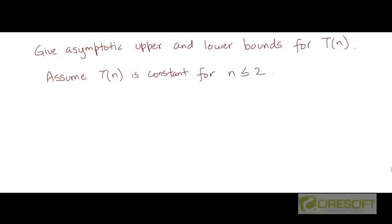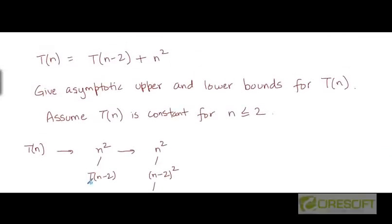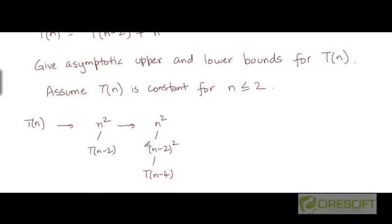We could try to use the recursion tree method. We start with a single node T(n), which gets replaced with n² and one single child T(n-2). Then in the next iteration, T(n-2) gets replaced by the node (n-2)² with the child T(n-4). That's because T(n-2) = T(n-4) + (n-2)². In the next iteration, T(n-4) gets expanded into (n-4)² with a child T(n-6).